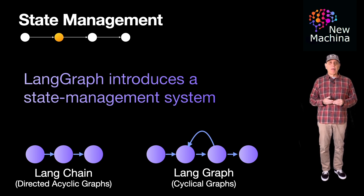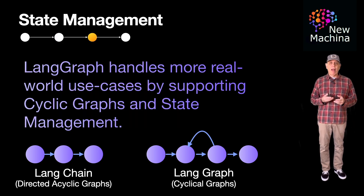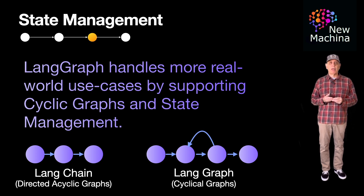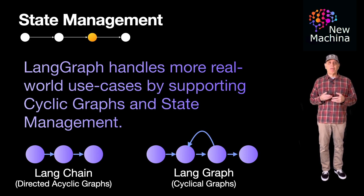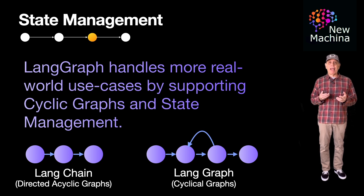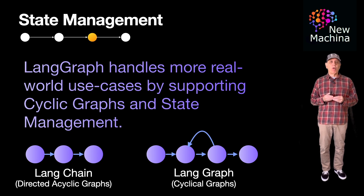In summary, both LangChain and LangGraph aim to simplify the development of applications using LLMs. But the two significant differences are: LangGraph takes a more advanced approach by enabling cyclical graphs and state management, making it a better fit for real-world agentic use cases.